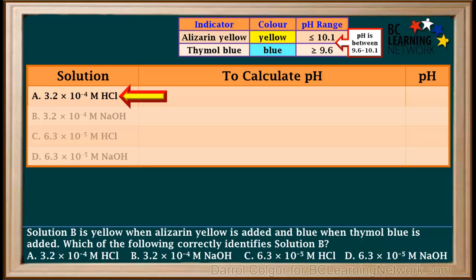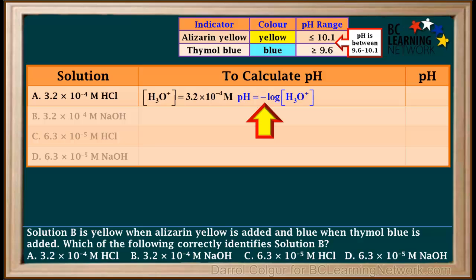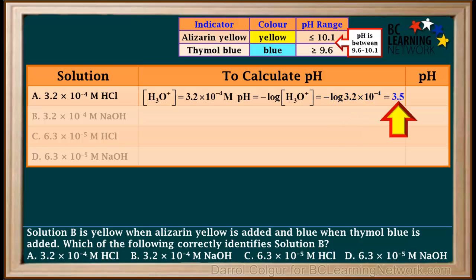Now we'll calculate the pH of each one of the given possible solutions and see which one fits within the range we came up with. We'll start with 3.2 times 10 to the negative fourth molar HCl. Because HCl is a strong acid, the concentration of H₃O⁺ is equal to the concentration of the acid, which is 3.2 times 10 to the negative fourth molar. pH is the negative log of the hydronium ion concentration, which comes out to 3.5 rounded to one decimal place.